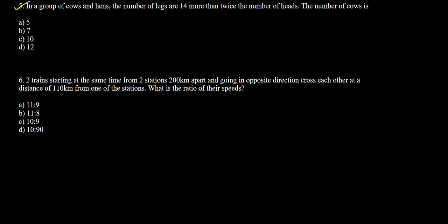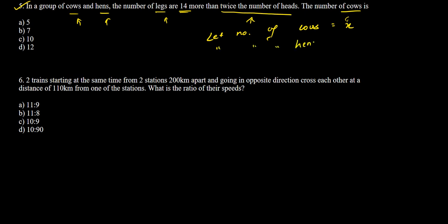Question 5 says: in a group of cows and hens, the number of legs is 14 more than twice the number of heads. Find the number of cows. Let the number of cows be x and the number of hens be y. A cow has 4 legs and a hen has 2 legs, so total legs equal 4x plus 2y.